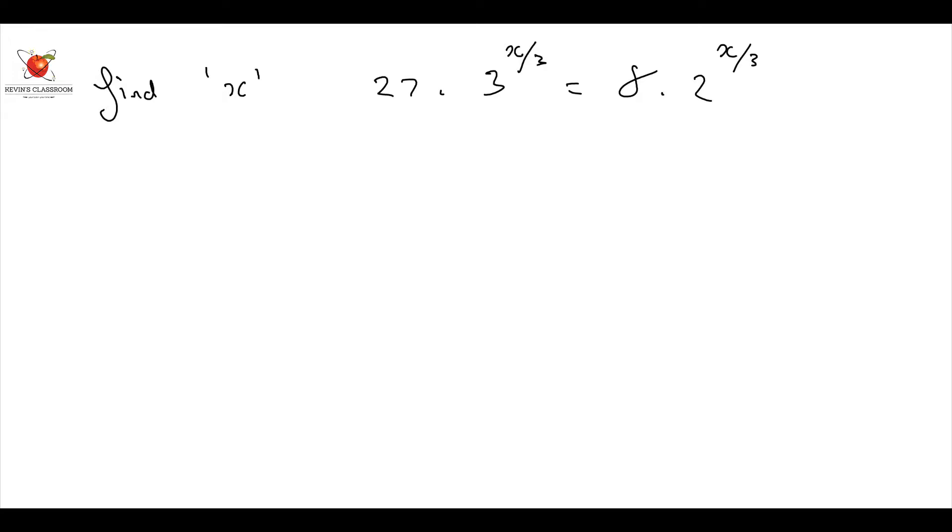But essentially, I should do prime factors, right? But let's put x's to the left, numbers to the right. So I'm going to say this is going to be 3 to the power of x over 3 divided by 2 to the power of x over 3 equals 8 over 27.